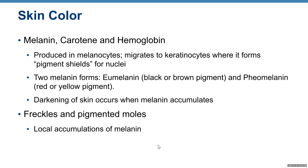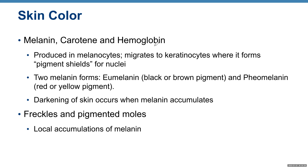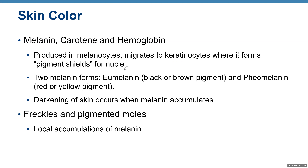Skin color is determined by three pigments: melanin, keratin, and hemoglobin. Keratin comes from your diet — your body doesn't make keratin. Your body does make melanin and hemoglobin. Hemoglobin is found inside red blood cells, and melanin is produced by melanocytes, then migrates to keratinocytes where it forms pigment shields for nuclei to protect them from UV radiation. We have two forms of melanin: eumelanin, which is black or brown, and pheomelanin, which is a red or yellow pigment. You will find a large accumulation of pheomelanin in the skin of the lips and nipples.